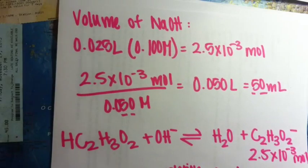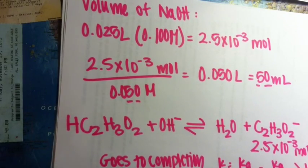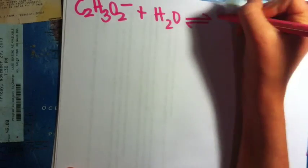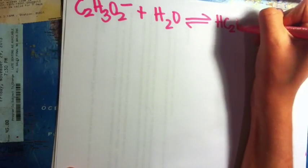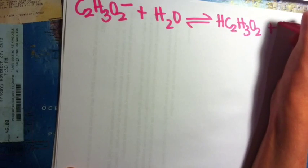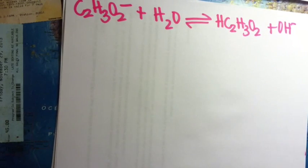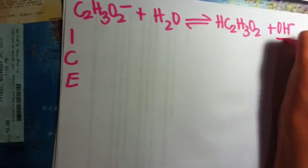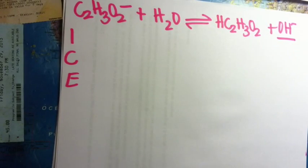We need to make a new equation to show the reaction that happens and creates the pH. This is what happens after all the acetic acid is neutralized. So we need to make an ICE box to find the concentration of OH minus, which will give us the pOH and the pH.